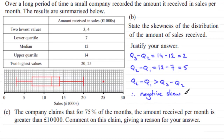Do remember that if it were the other way round — if Q3 minus Q2 was larger than Q2 minus Q1 — then it would be positive skew.